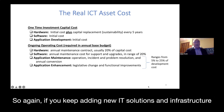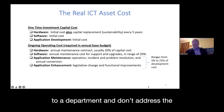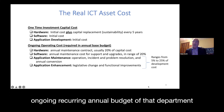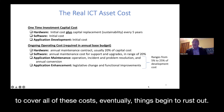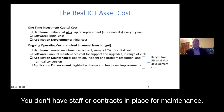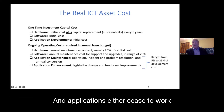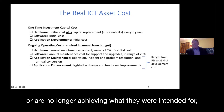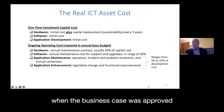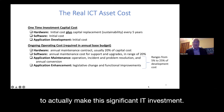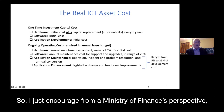If you keep adding new IT solutions and infrastructure to a department without addressing the ongoing recurring annual budget to cover all of these costs, eventually things begin to rust out. You don't have staff or contracts in place for maintenance, and applications either cease to work or are no longer achieving what they were intended for when the business case was approved.